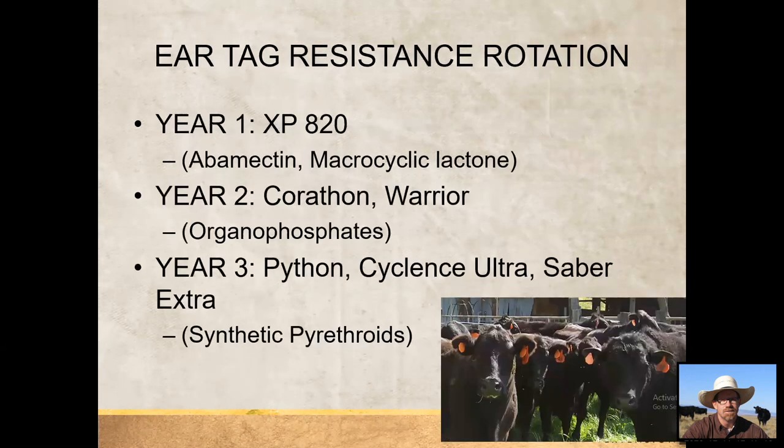Here's an example chemical rotation. Year one, use a macrocyclic lactone; year two, an organophosphate; year three, a synthetic pyrethroid; then come back to the macrocyclic lactone in year four.